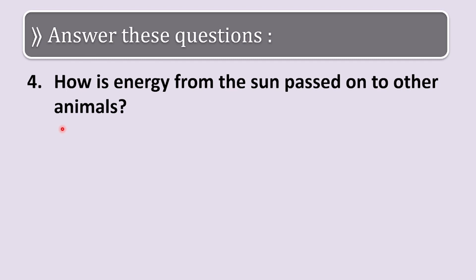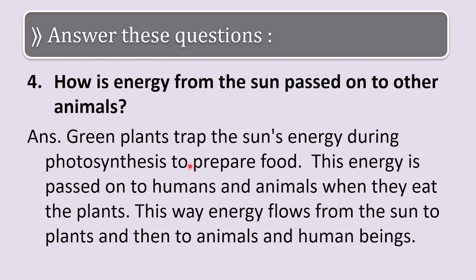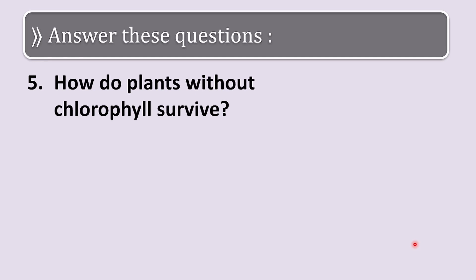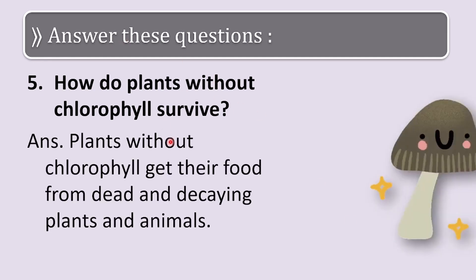Long answer Q4: how is energy from the Sun passed on to other animals? Green plants trap the Sun's energy during photosynthesis to prepare food. This energy is passed on to humans and animals when they eat the plants. This way energy flows from the Sun to plants and then to animals and human beings.